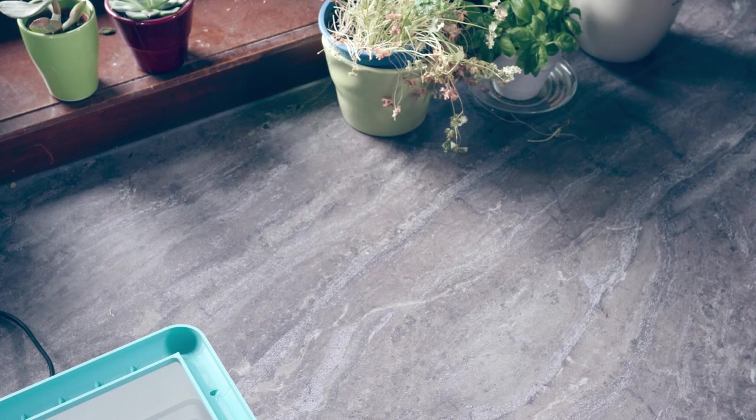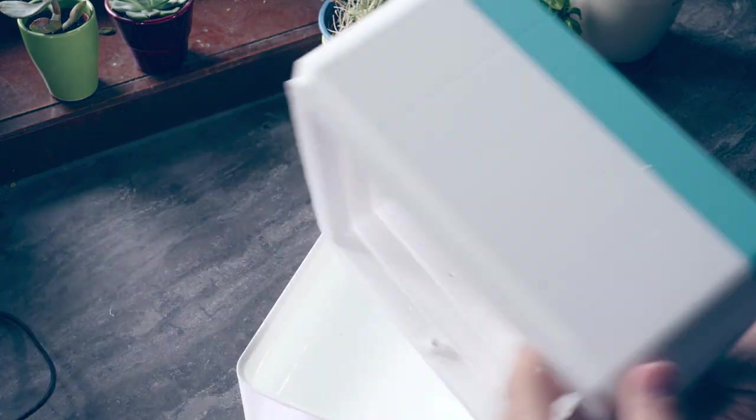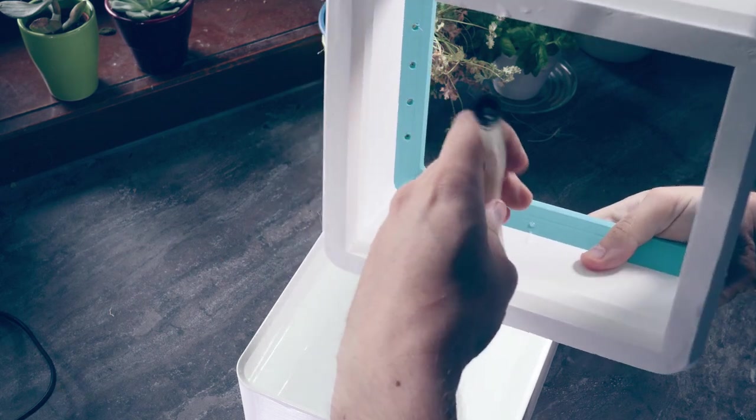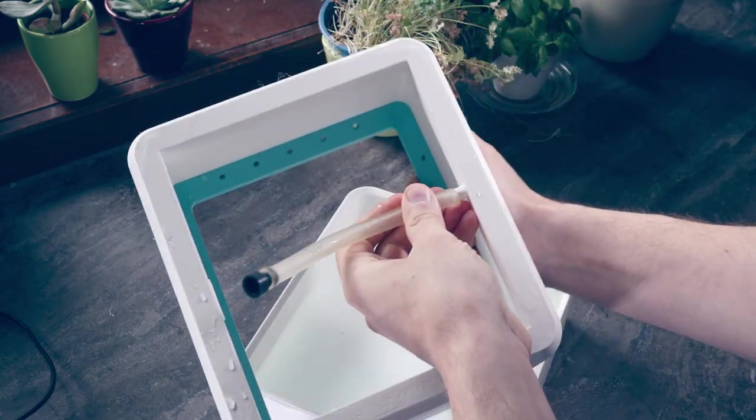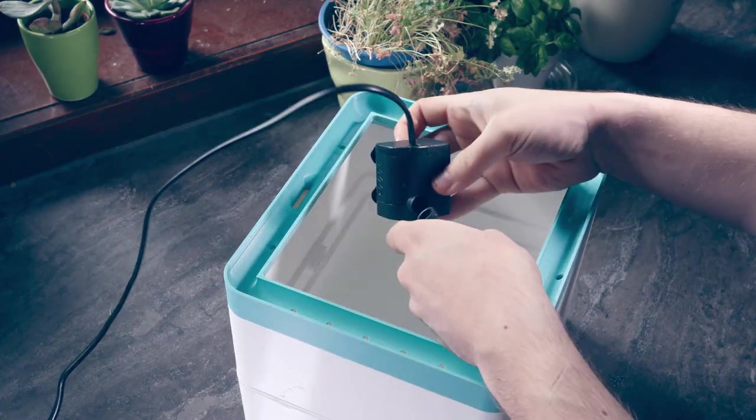Then I 3D print the planter that goes on top and I realize that I'm running out of white filament, so I go for a mid-print filament change which actually looks pretty cool. And here I am testing the assembly for the first time.